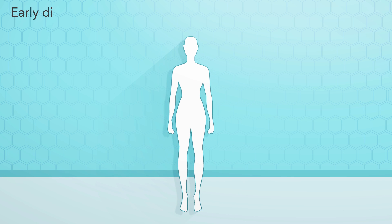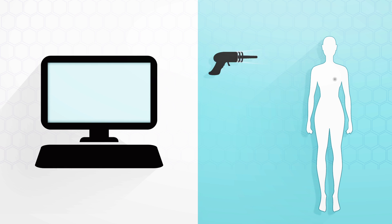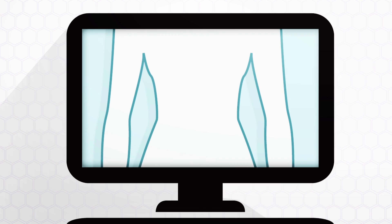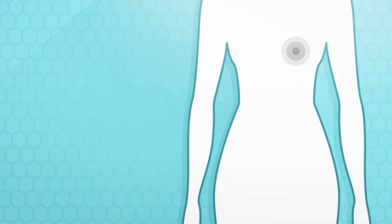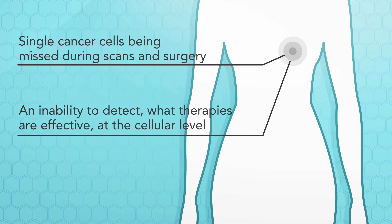This is why early disease detection and diagnosis can make the difference between life and death. However, many of the modern diagnosis and imaging approaches do not possess the single cell sensitivity, leading to single cancer cells being missed during scans and surgery, and an inability to detect what therapies are effective at the cellular level.